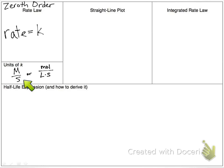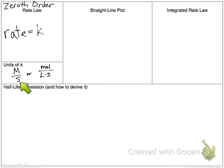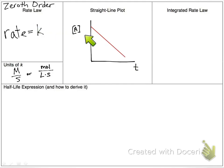There are two ways to write that: first, molarity per second; but also, since molarity is moles per liter, we can write moles per liter seconds. So two ways to write our units of k. Now, the straight-line plot of this is concentration versus time — we know for a zeroth order reaction the concentration versus time graph will be linear.